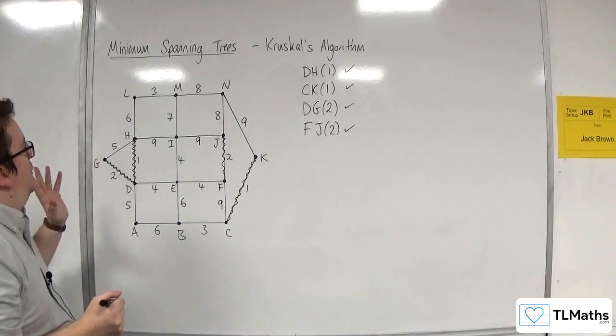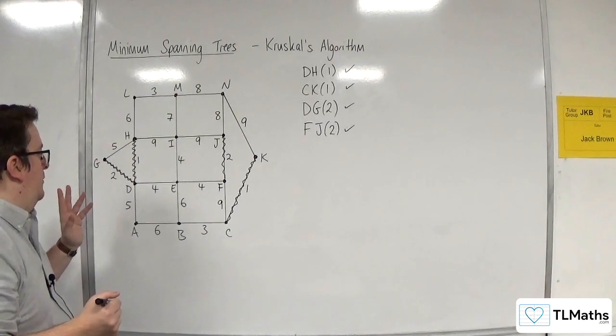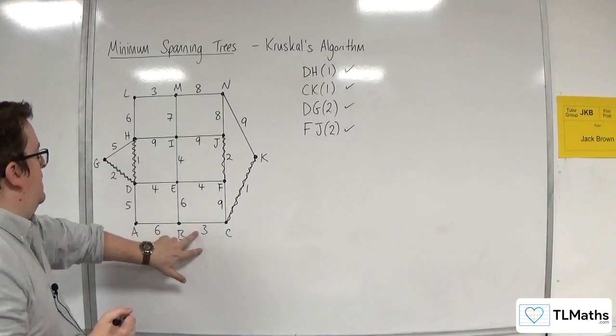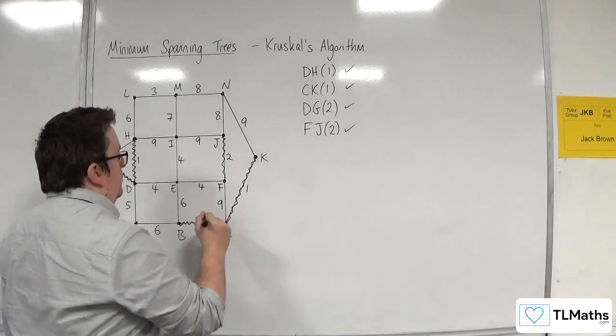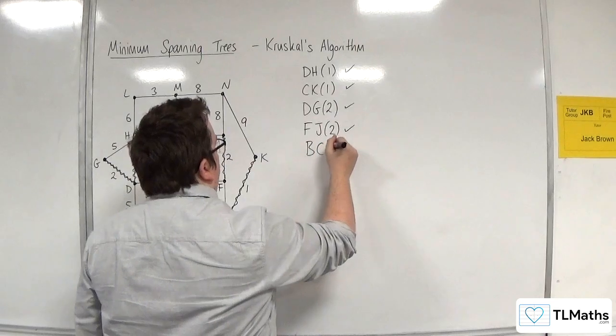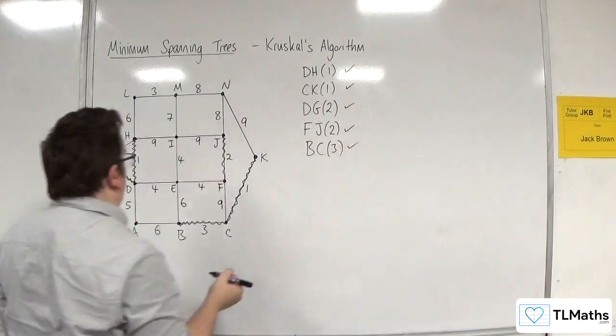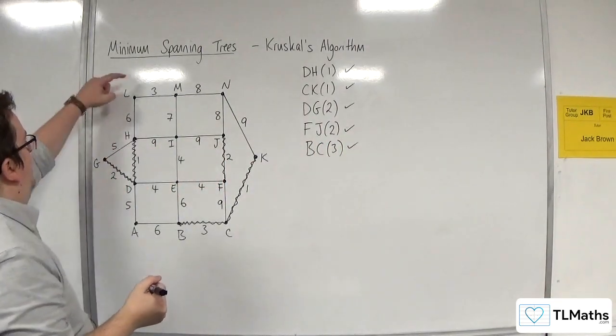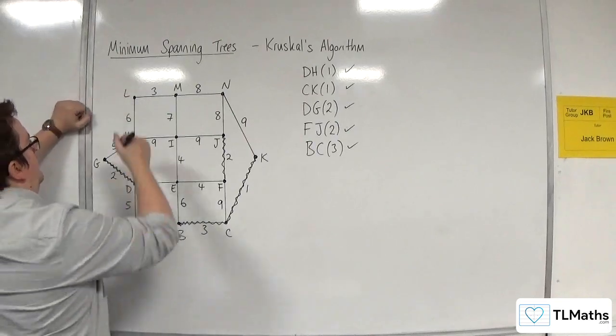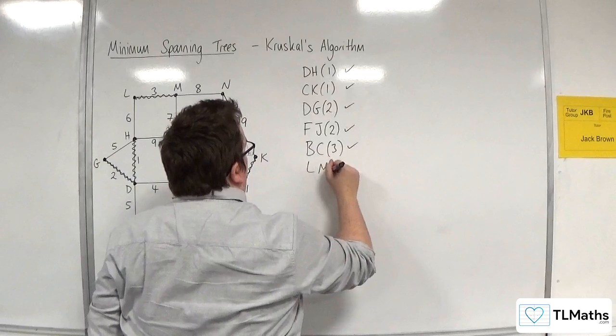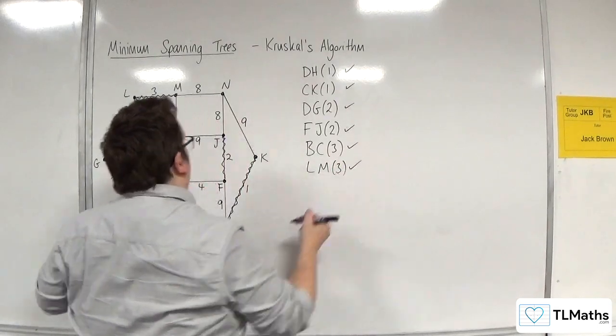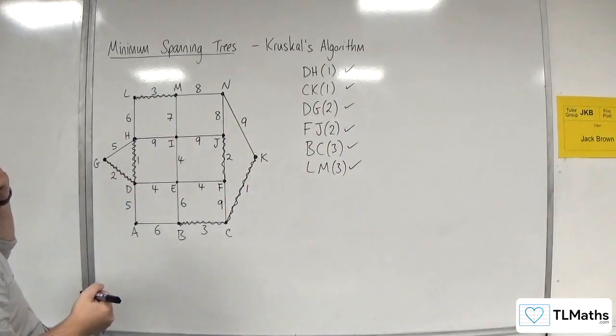I don't think there are any more 2s, so I'm going to go for 3s next. We've got a 3 down here, so BC. I'll have that one because that won't cause a cycle. That's all good. And I've got LM up here. So that won't cause a cycle either. So LM with 3. I'll have that one.